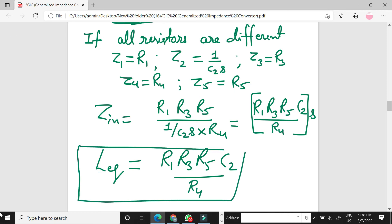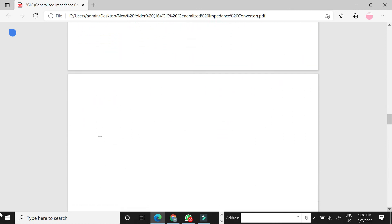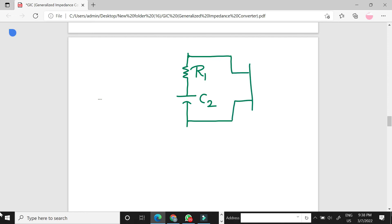So this is the value of equivalent inductance. The circuit diagram becomes based on the value of inductance is R1 R5 C2.